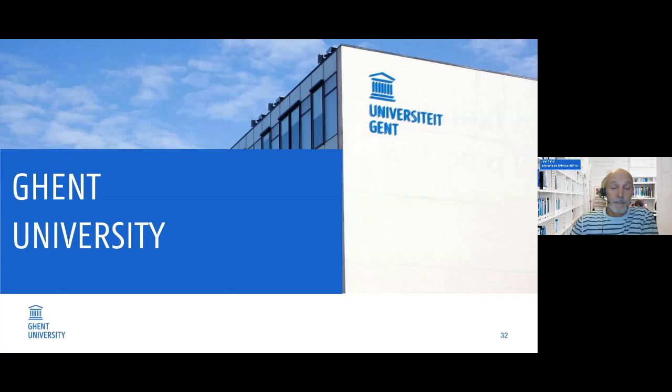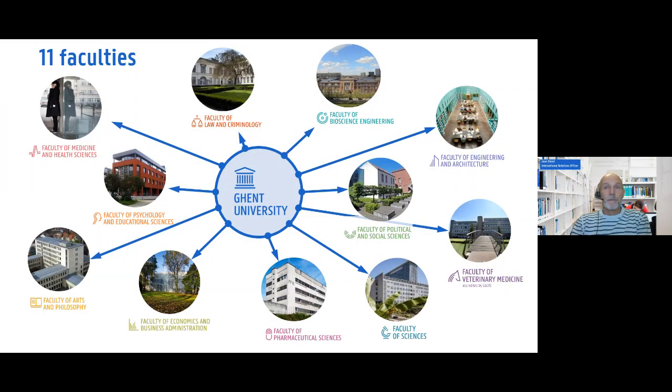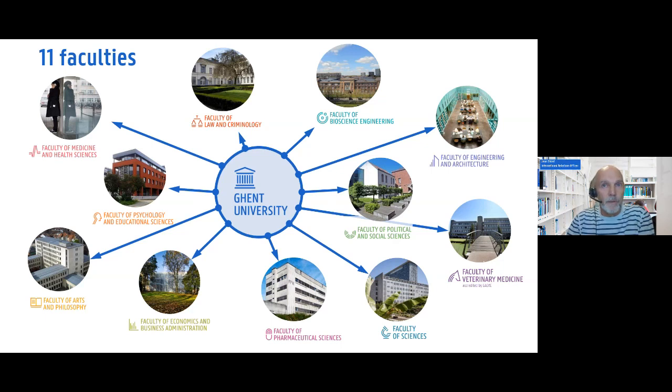Ghent University was established in 1817 — over 200 years ago — making it older than the country itself. It's a top-100 university and has 11 faculties covering each research field possible. The faculties are spread across the city rather than on one campus, creating a nice blend between student life and city life, as Hilde has already pointed out.